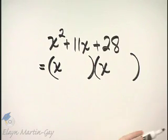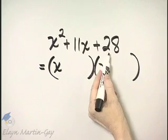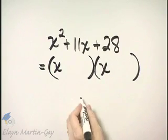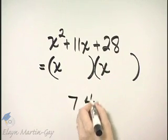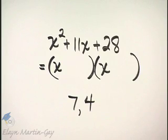We are looking for positive factors of 28 whose sum is 11. I know 7 times 4 is 28 and 7 plus 4 is 11, so those are my two numbers.